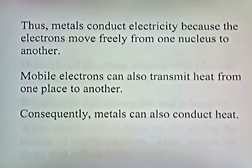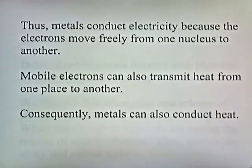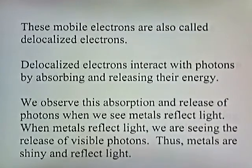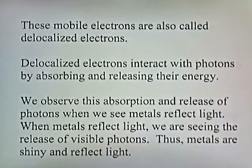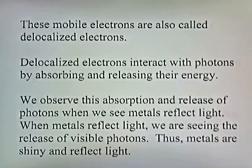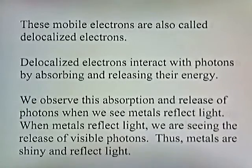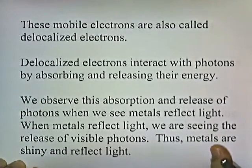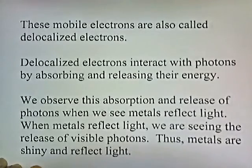Metals conduct electricity because electrons move freely from one nucleus to another. Mobile electrons can also transmit heat from one place to another, so metals can also conduct heat. These mobile electrons are also called delocalized electrons. Delocalized electrons interact with photons by absorbing and releasing their energy, and we observe this when we see metals reflect light — the release of visible photons. Thus, metals are also shiny and reflect light.